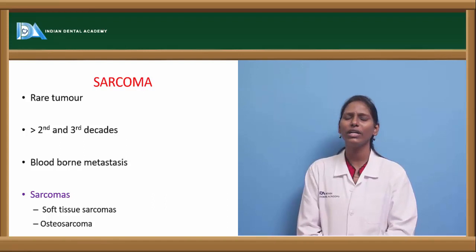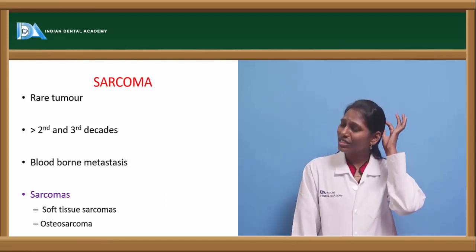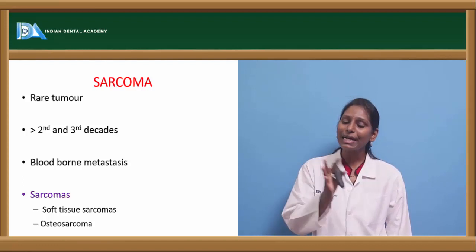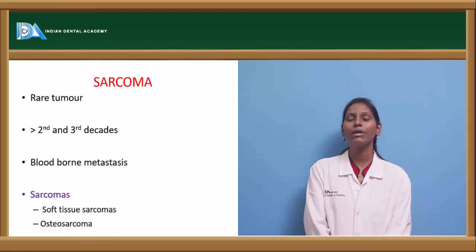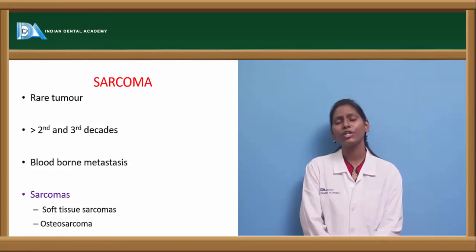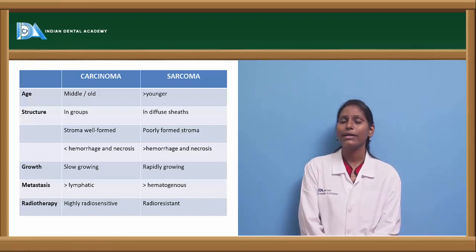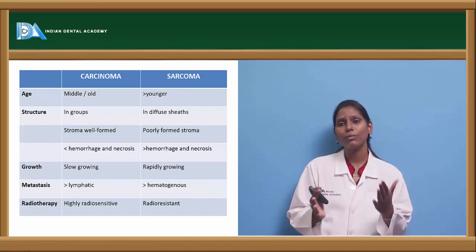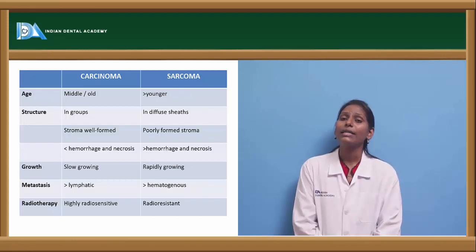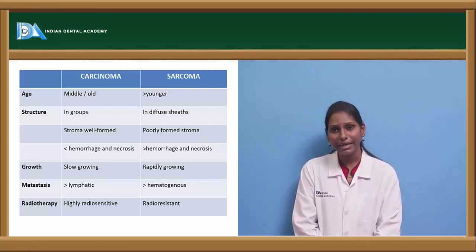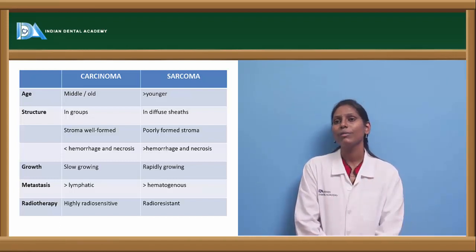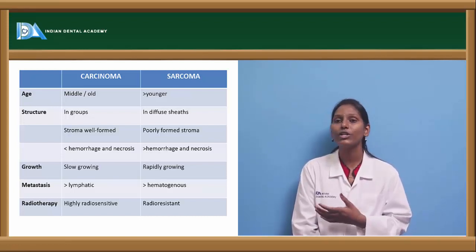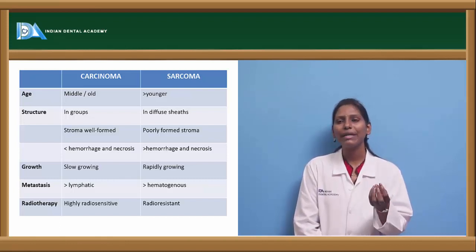Sarcoma is a soft tissue tumor — a rare tumor, only 1% of all tumors. It can also involve hard tissue, for example bone osteosarcoma. It usually occurs in younger age groups in the second and third decades of life. Metastasis is usually by the hematogenous route. Key differences from carcinoma: carcinoma occurs in middle and old age whereas sarcoma occurs in younger age; carcinoma forms in groups with well-formed stroma, whereas sarcoma is diffuse with poorly formed stroma.